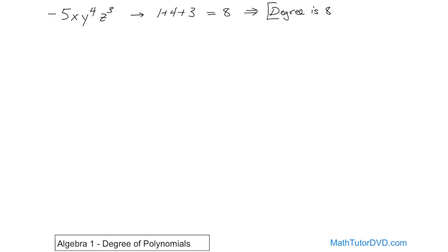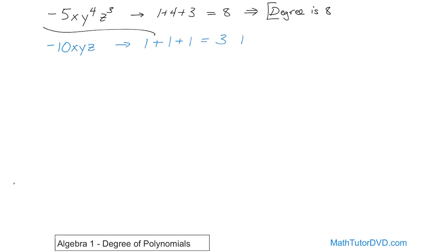It's easy in this case because there's really only one term. When there's only one term like this, you just add the exponents up, and that is what we call the degree. Taking another example, if you had negative 10 times x times y times z, you just add up the exponents of everything. x, y, and z are each raised to the power of 1, so the degree is 3.